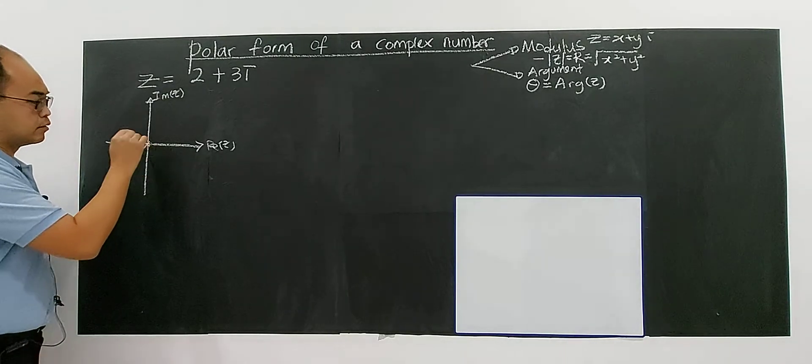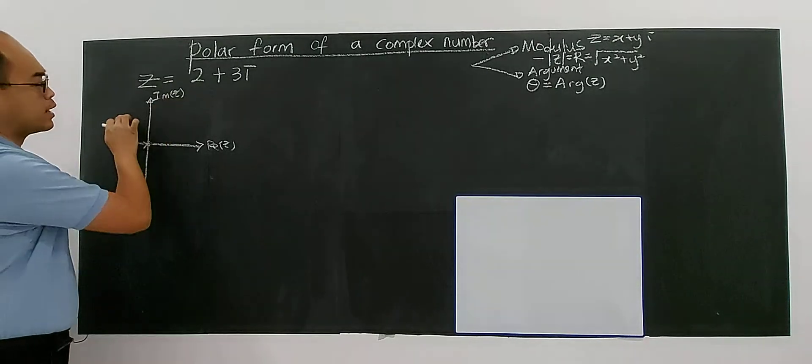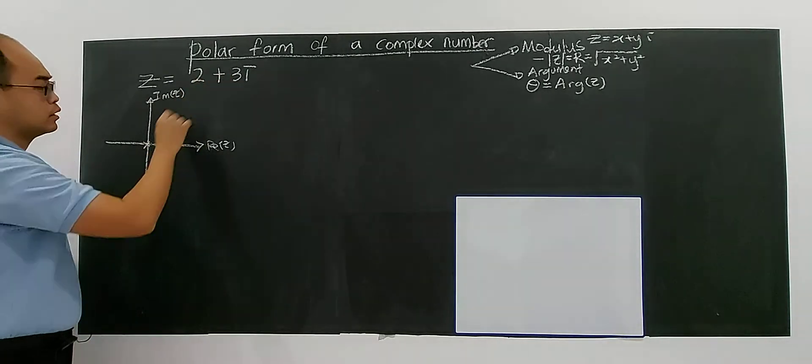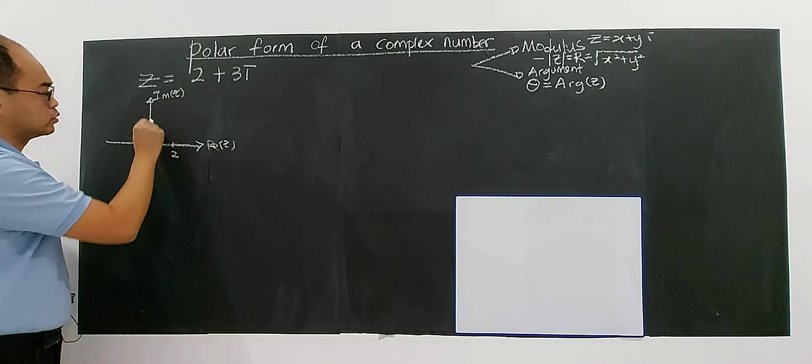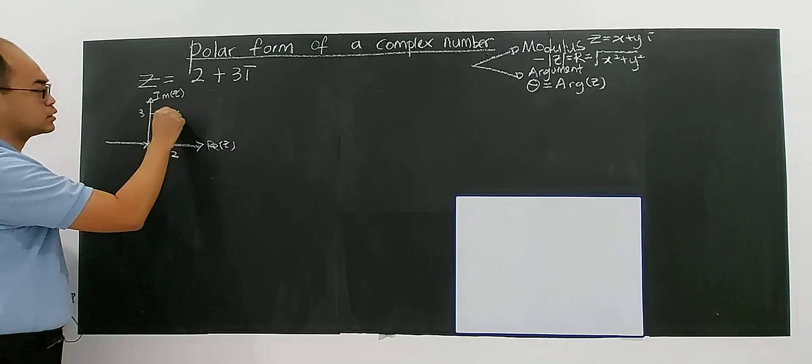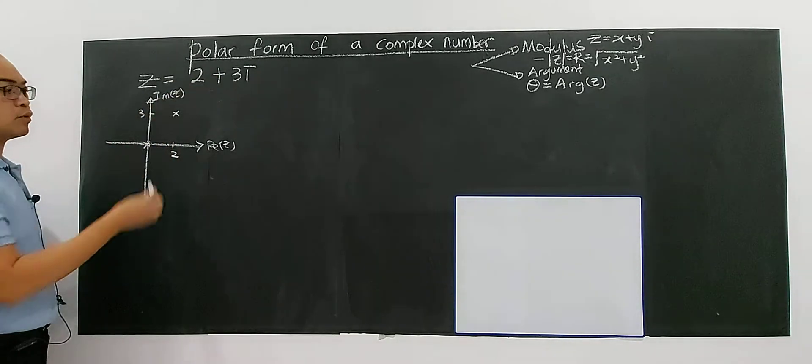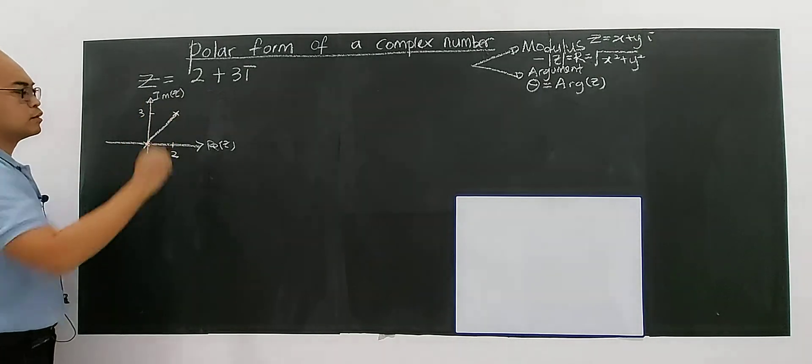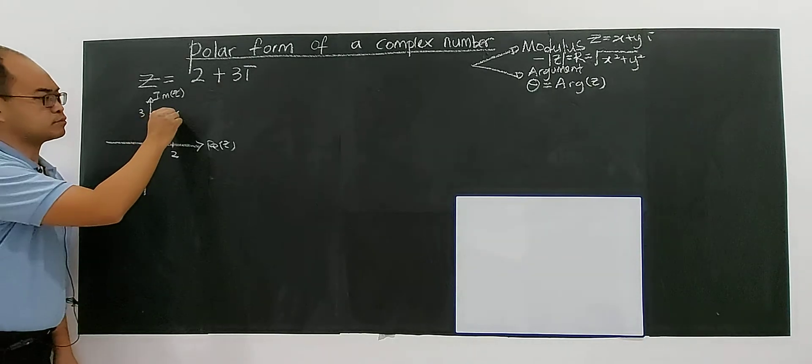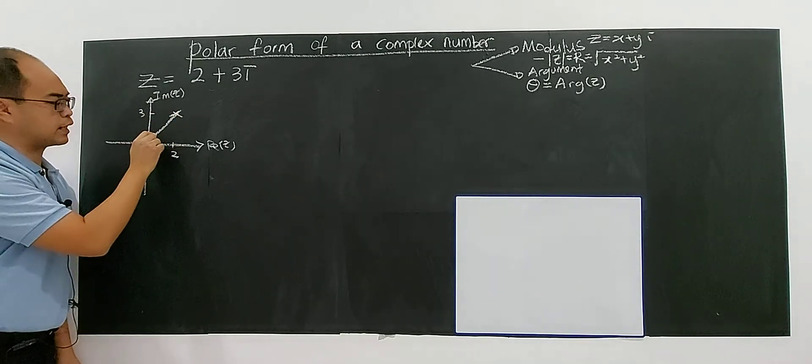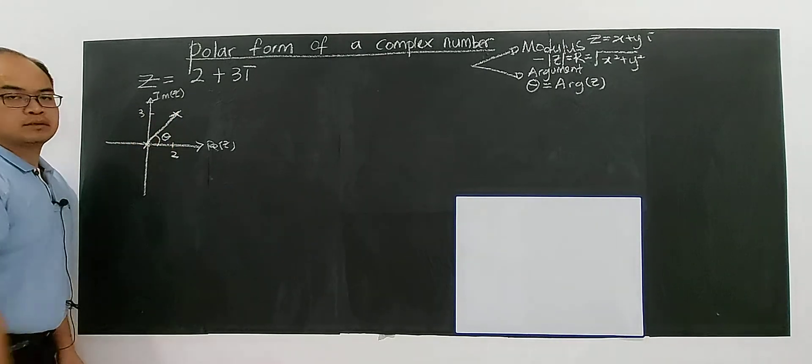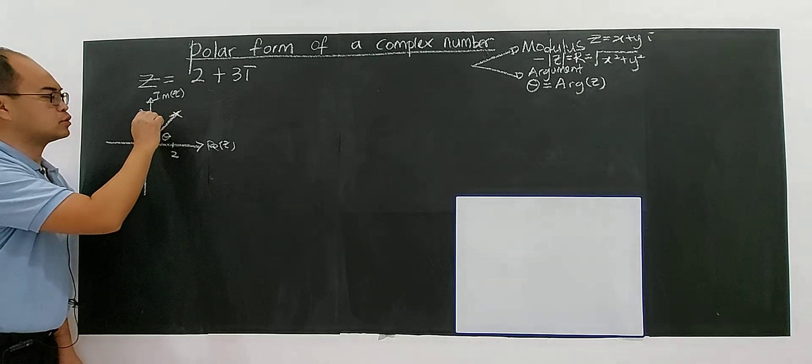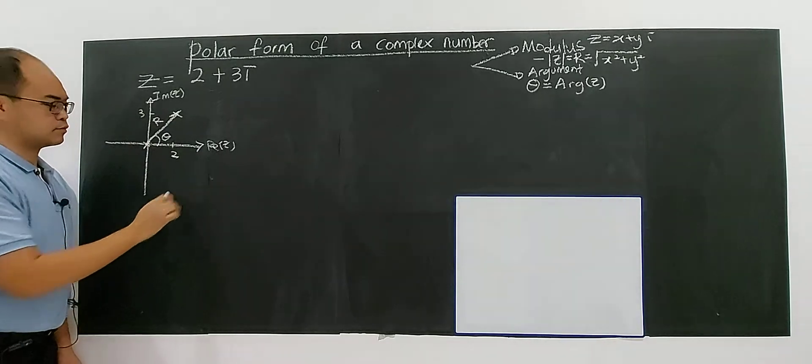You should understand where the point is. This can be converted to a coordinate, which is (2, 3). This is in the first quadrant because both values are positive, on the positive x and positive y axis. In this first quadrant, this will be your argument, and this is the modulus of z.